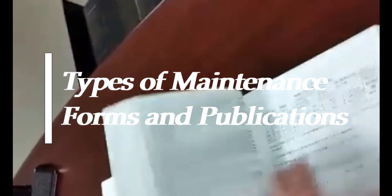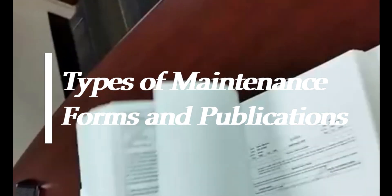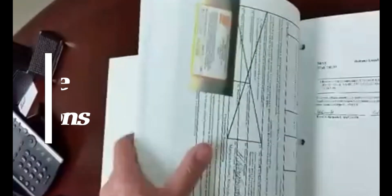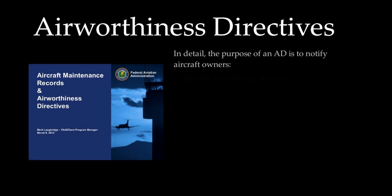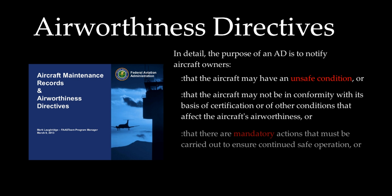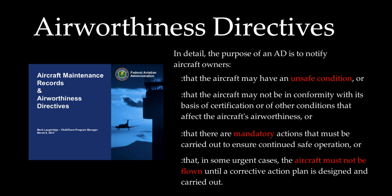Let us talk about aircraft maintenance forms and publications. An airworthiness directive, commonly abbreviated as AD, is a notification to owners and operators of certified aircraft that a known safety deficiency with a particular model of aircraft, engine, avionics or other system exists and must be corrected. If a certified aircraft has outstanding airworthiness directives that have not been complied with, the aircraft is not considered airworthy.